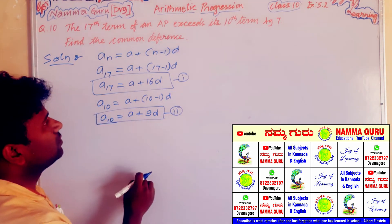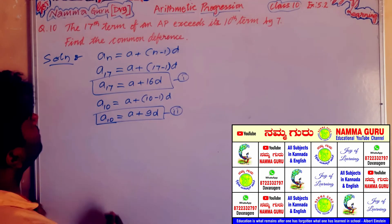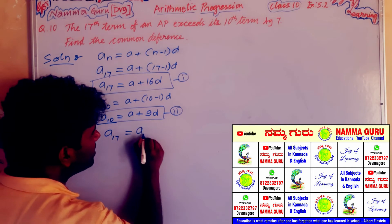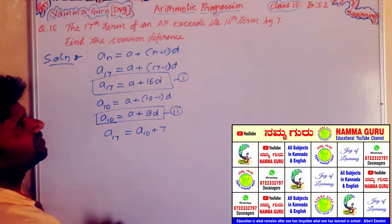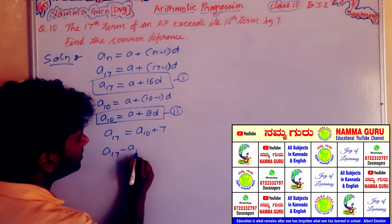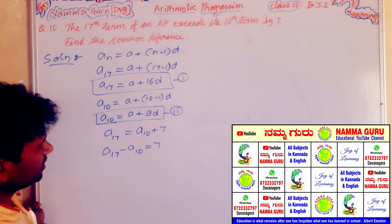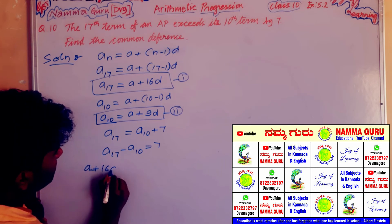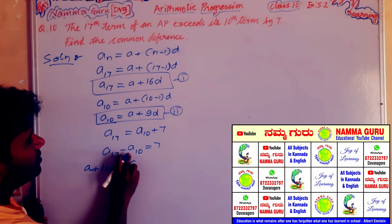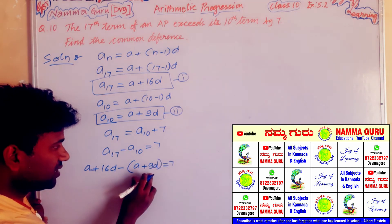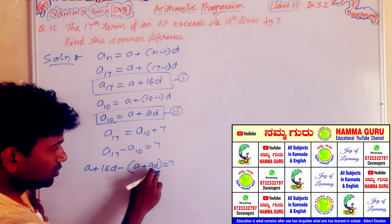The 10th term is equal to a plus n minus d. The 17th term of an AP equal to a plus n, this is a_17.